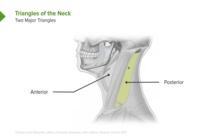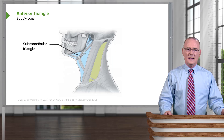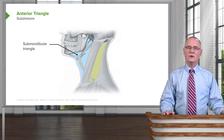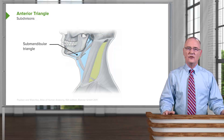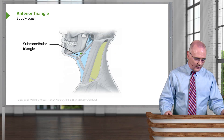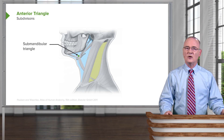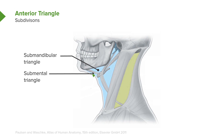That leads us to the green colored region, which represents the posterior triangle of the neck. Its posterior boundary, seen right along here, represents the trapezius muscle. Each triangle can be divided into smaller subdivisions. Looking at the anterior triangle — this one is more complex — we can see the region just inferior to the mandible, bounded by the stylohyoid muscle and the anterior belly of the digastric. This area represents the submandibular triangle.